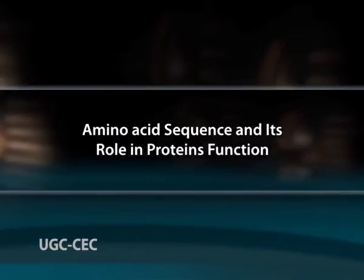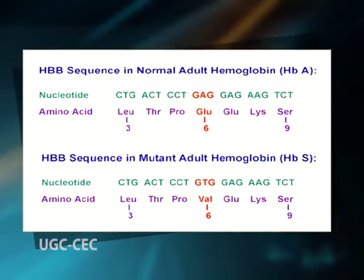Now let us see the amino acid sequence and its role in protein functions. The amino acid sequence provides the information required to determine the molecule's 3D structure and function. Various changes that arise in the sequence as a result of genetic mutation in the DNA may not be readily tolerated. The earliest and best studied example is the change in amino acid sequence of hemoglobin that causes the disease sickle cell anemia.